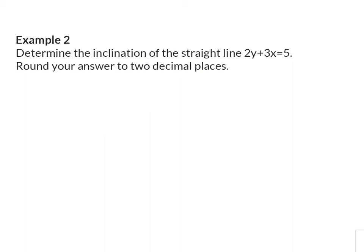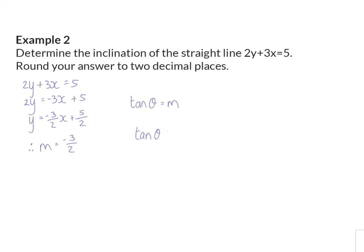Example 2: Determine the inclination of the straight line 2y + 3x = 5, and round your answer to two decimal places. This time, instead of giving us two coordinates to calculate the gradient, we are given the equation of the line. The equation is not in standard form, so our first step is to rewrite it with y alone so we can read the gradient. Once in standard form, we can see the gradient is minus 3 over 2. Substituting this into the inclination formula and, because the gradient is negative, calculating a reference angle first, theta equals 180 degrees minus the reference angle, giving theta equals 123.69 degrees.